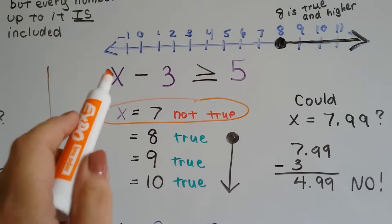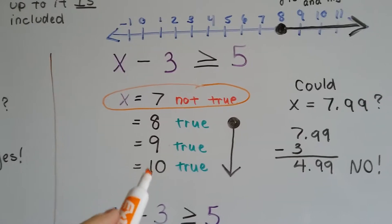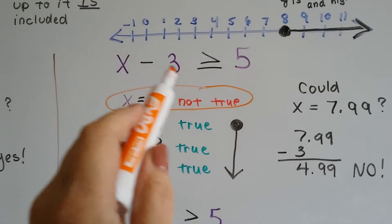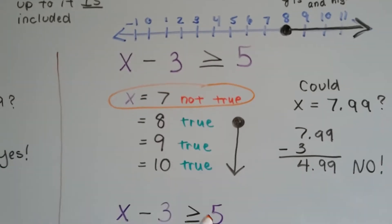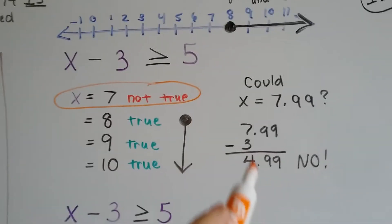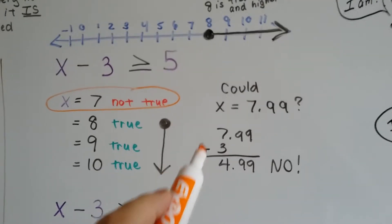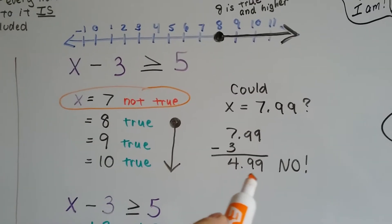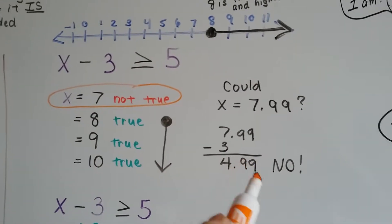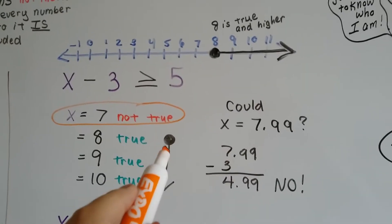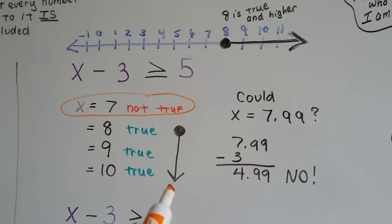Would 9 be true? 9 minus 3 is 6. That's greater than 5, so yes, that's true. How about 10? 10 minus 3 is greater than 5. That's true. So it could be equal to or greater than. How about 7.99? If we had 7.99 and took away 3, that's 4.99. That's not greater than or equal to 5, so no, it's not included.